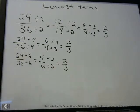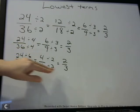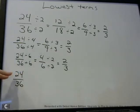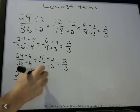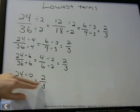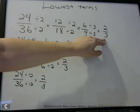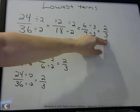Whatever occurs to you first, just keep going until you get to lowest terms. The fastest way is if you recognize that both 24 and 36 can be divided by 12: 24 divided by 12 is 2, and 36 divided by 12 is 3 — you get there in one step. If you recognize a higher number, you get there quicker, but it really doesn't matter. However you get there, just keep working until the fraction is in lowest terms.